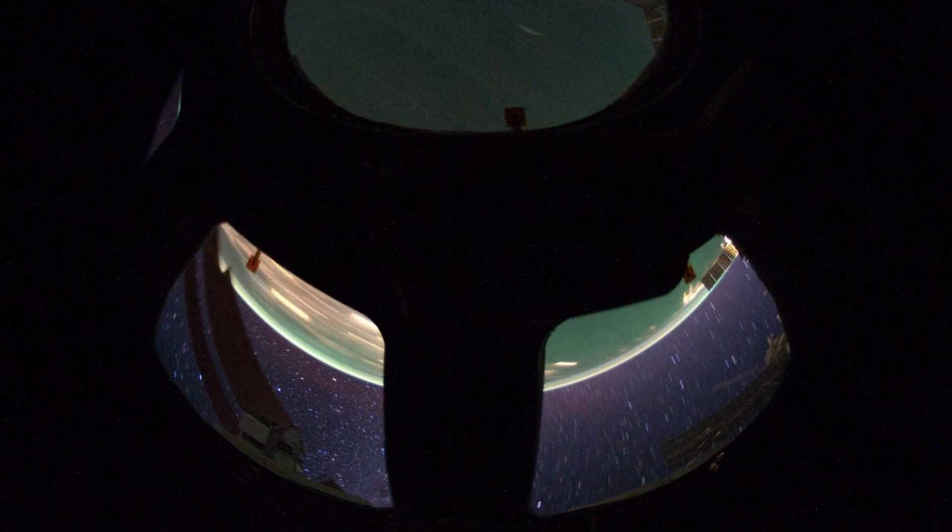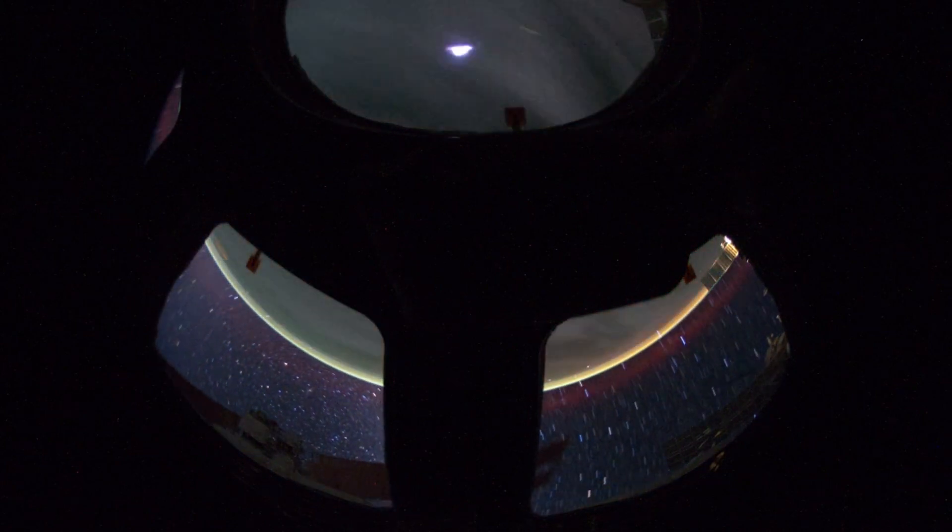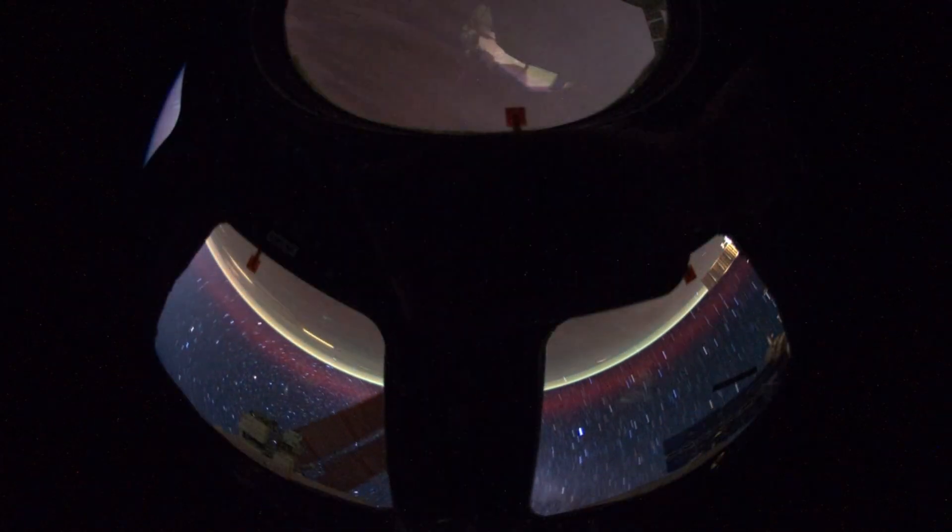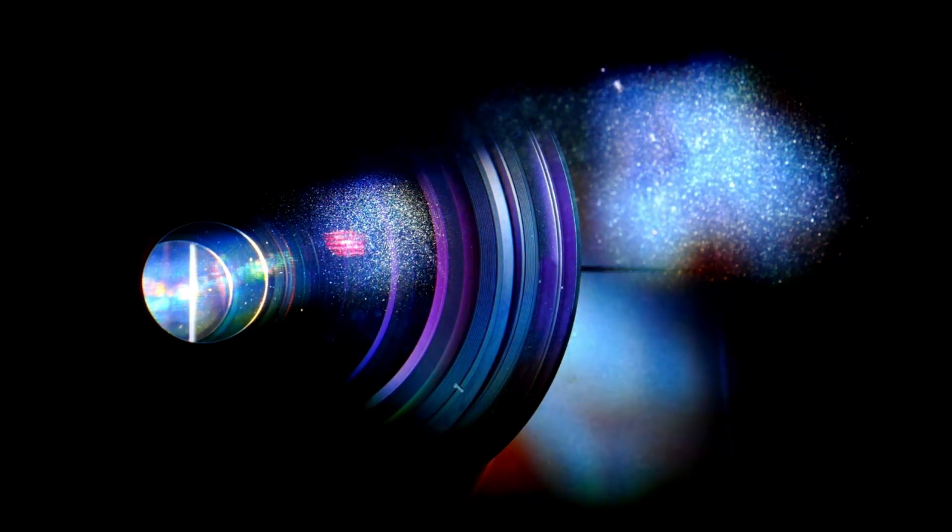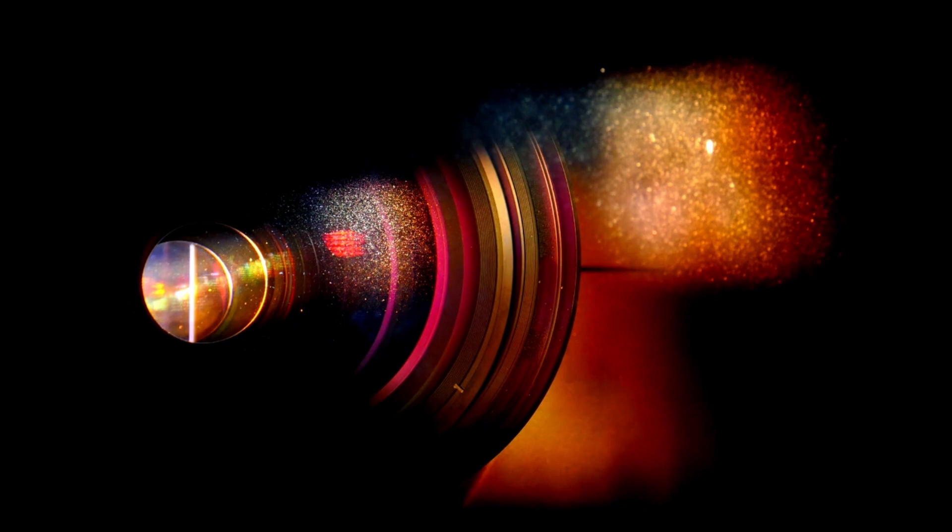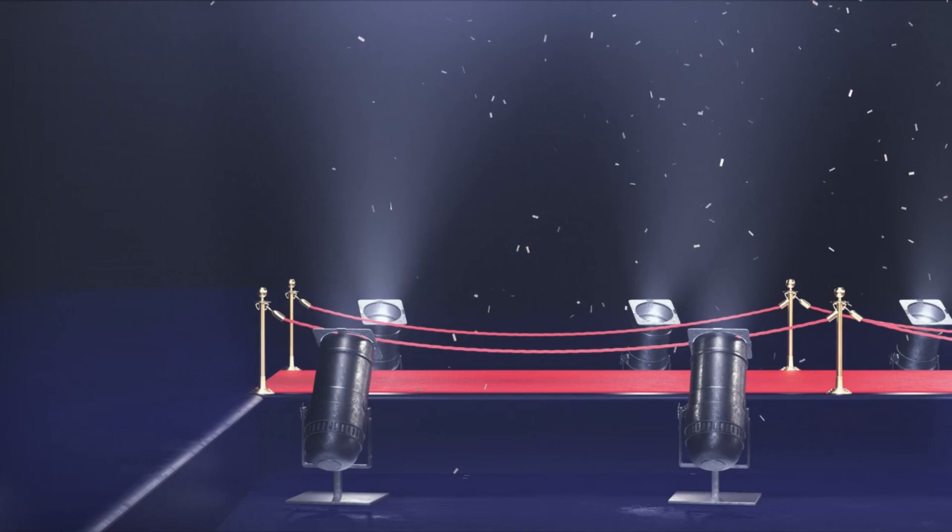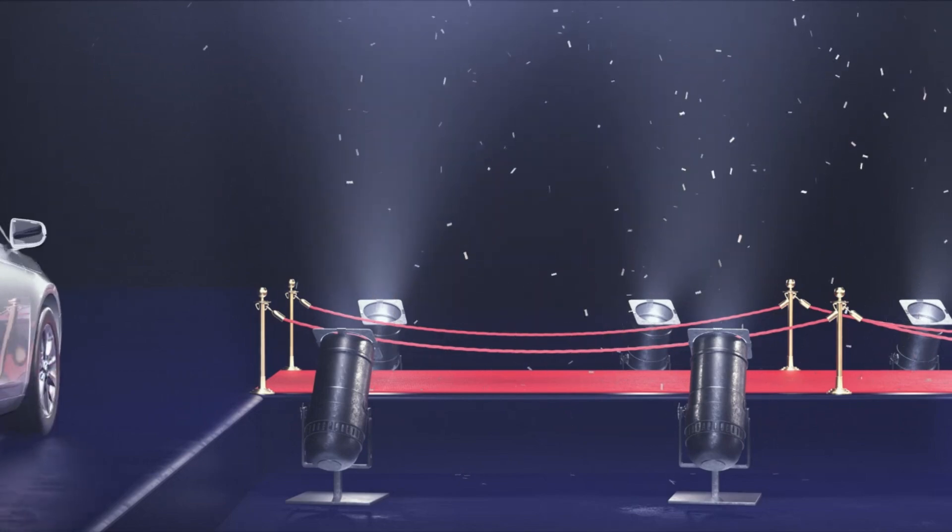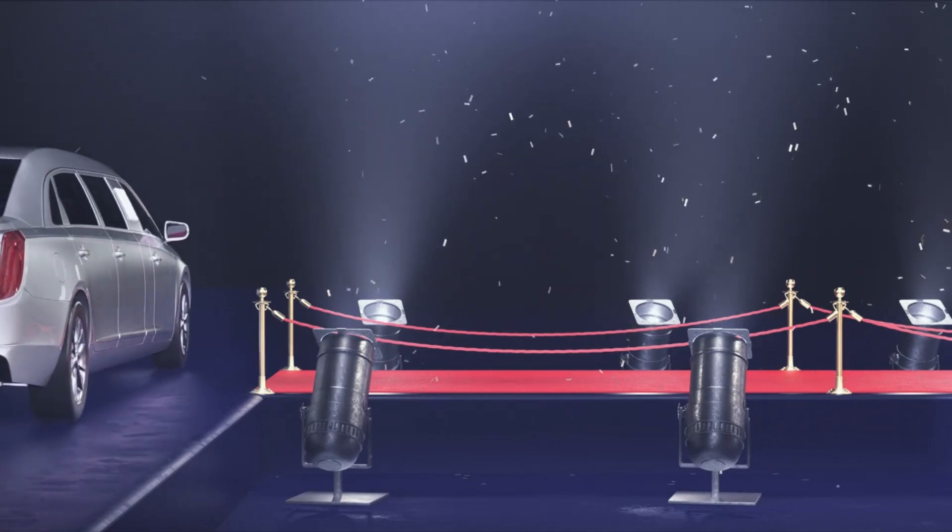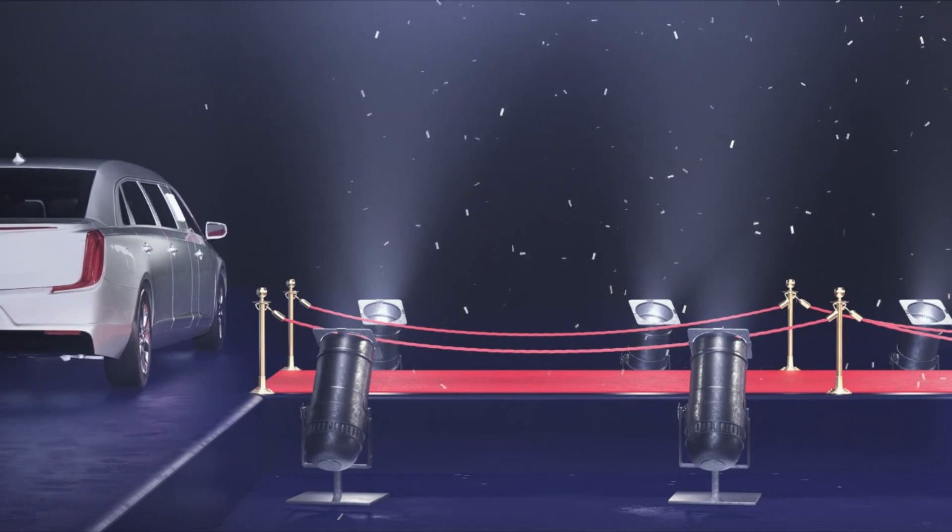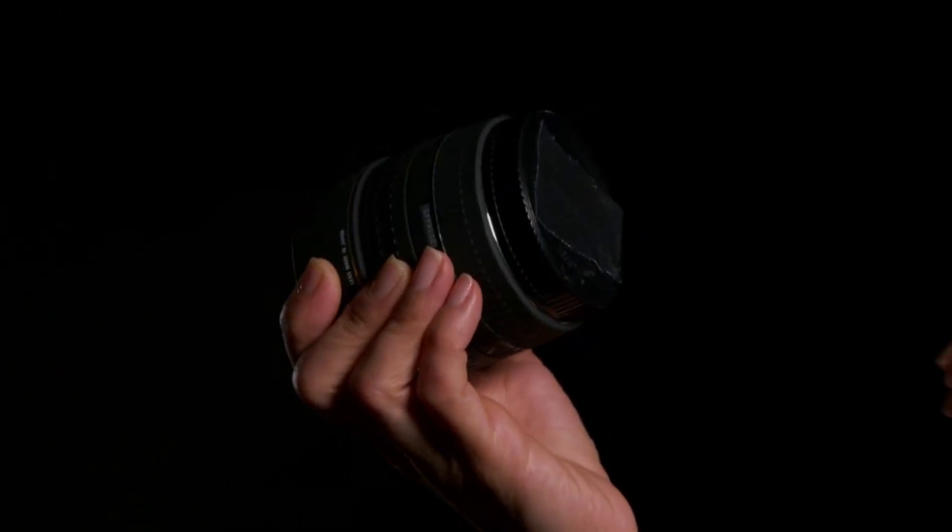The James Webb Space Telescope represents the most advanced observational tool humanity has ever created for such a task. Unlike previous instruments, it can observe celestial phenomena in the infrared spectrum with extraordinary sensitivity and resolution. This capability allows it to detect the faintest heat signatures from some of the oldest and most distant structures in the universe, offering a kind of time machine that lets us look back to the birth of stars and galaxies, and even to moments shortly after the Big Bang itself. The telescope acts like a sophisticated filter applied to the lens of a camera, isolating very specific wavelengths of light that reveal hidden details invisible to the naked eye or to traditional optical instruments.